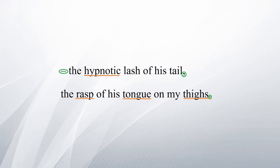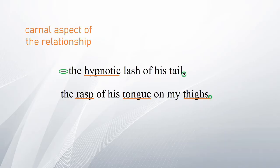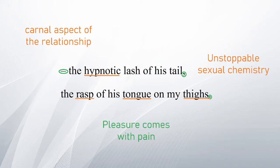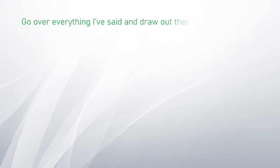'The hypnotic lash of his tail, the rasp of his tongue on my thighs.' Through these two lines it is evident the persona is discussing the carnal aspect of the relationship, highlighting the idea of unstoppable sexual chemistry and the concept of pleasure and pain, exploited by the use of commas.